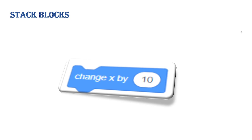Change X By changes the X position of the sprite by the value entered by the programmer. The default value is 10, but you can change it. This block manages the sprite's X axis, which represents the horizontal position on the stage — so you are monitoring and managing where the sprite stands along the horizontal line.